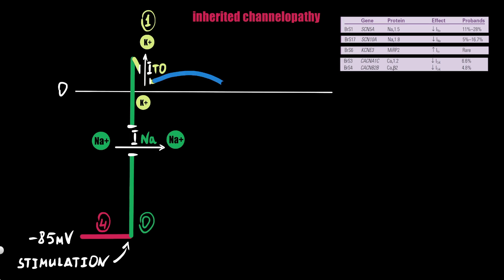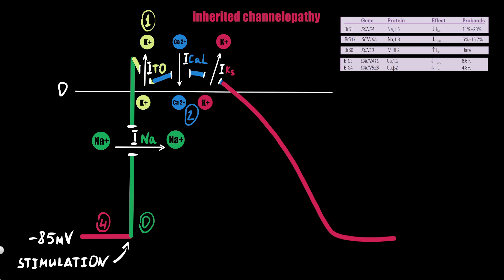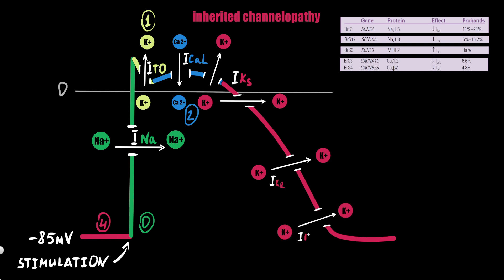The next phase is phase 2, also known as the plateau phase. This relatively long plateau is mediated by the balance between inward calcium current and outward potassium current. Calcium current flows through special L-type calcium channels, marked I-calcium-L. Potassium current flows through slow potassium channels. Phase 3 is rapid repolarization, provided by multiple outward potassium currents — including slow potassium current, rapid potassium current, and inward rectifier potassium current — while calcium channels close. A separate video on action potential with additional details about currents, channels, and phases is linked in the description.